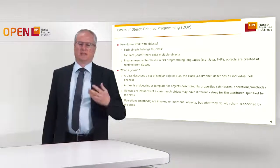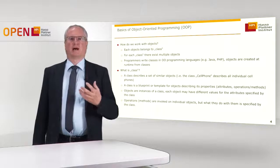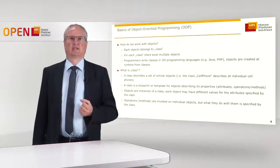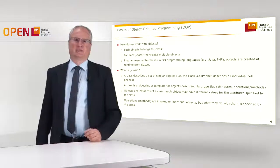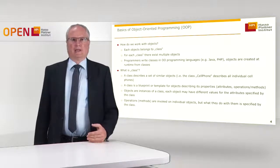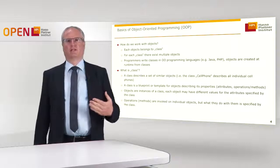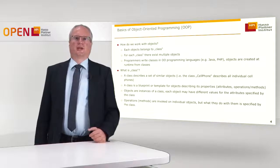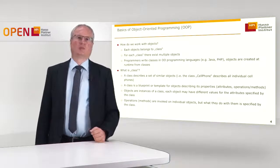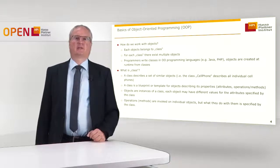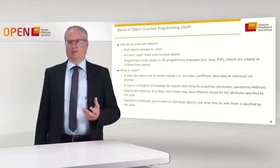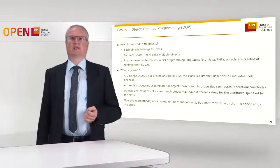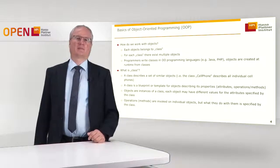An object is sort of an instance of a class, and the class can be understood as a blueprint that describes how the objects of this class look like. A class describes a set of objects and models a concept of the real world or an abstract concept. The developer actually writes classes, then instantiates classes to create objects and uses these objects. The class describes the properties or attributes of the objects — basically the values and data that the object contains — and the operations that the client program can do with the object.